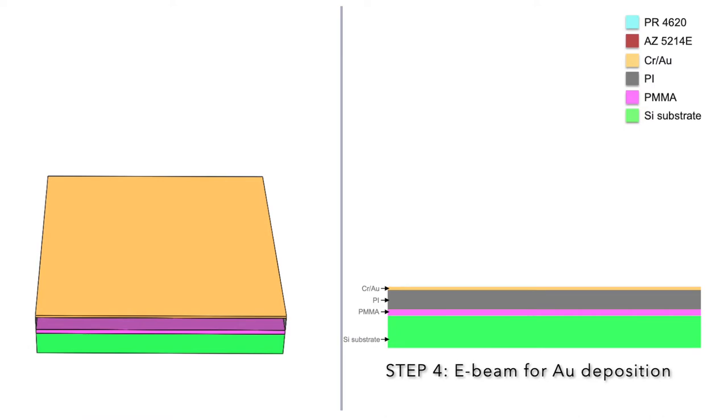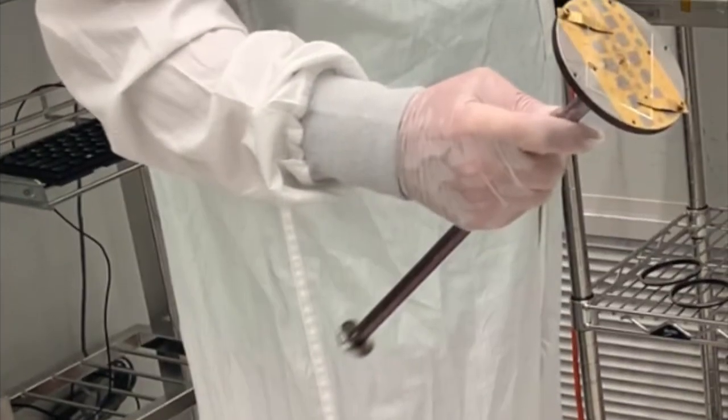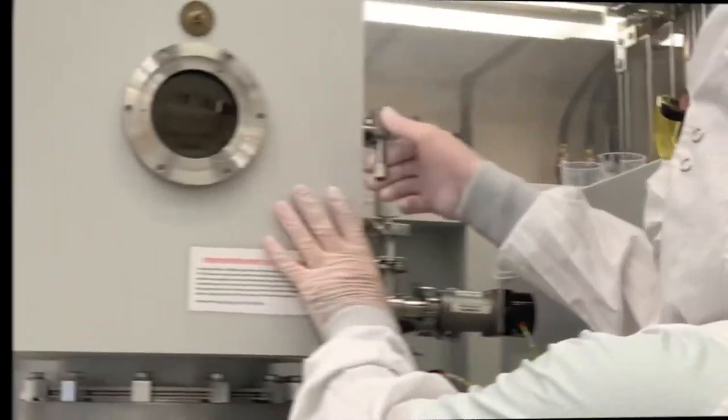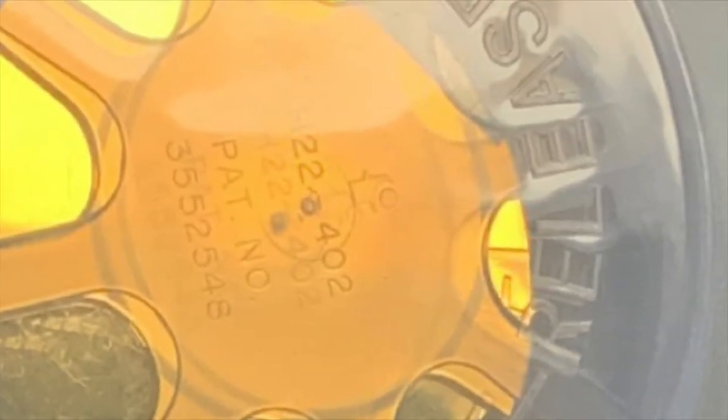We are now ready to add our electrically active sensor element, gold. We use an electron beam metallization technique to first add a 10 nanometer layer of chromium to aid adhesion followed by another layer of 200 nanometer of gold.